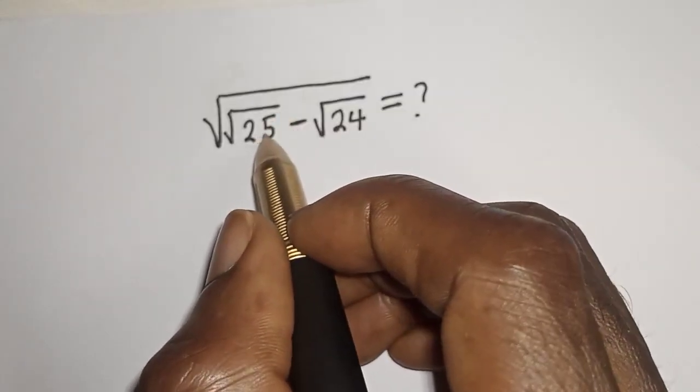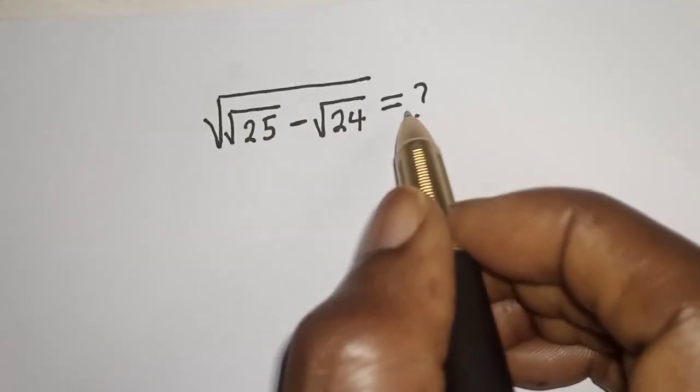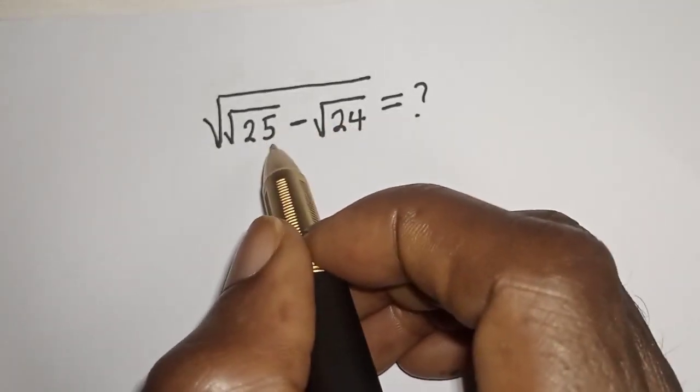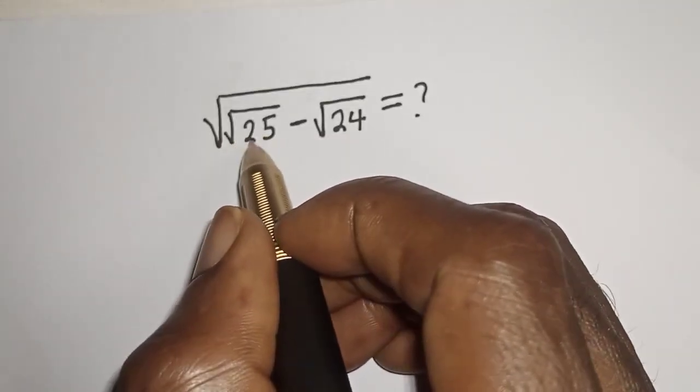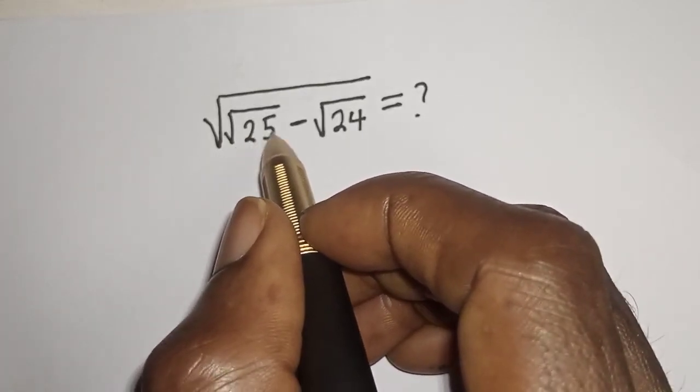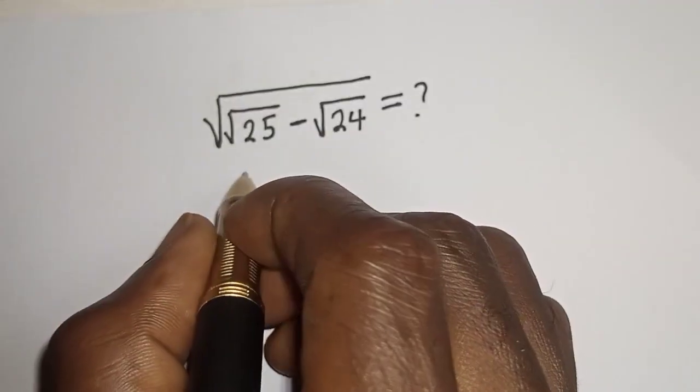Square root of square root of 25 minus square root of 24 is equal to what? Hi everyone, welcome to my class. In this class we want to evaluate this nice math problem, but before we proceed please don't forget to like, share, comment and subscribe. Solution.